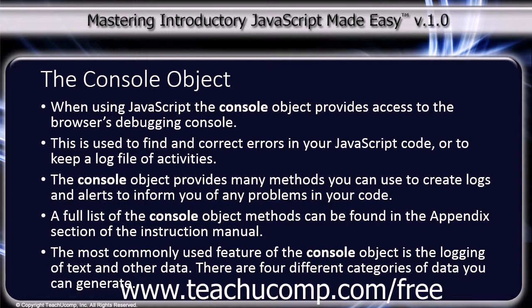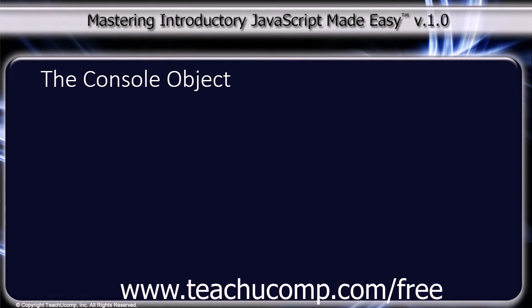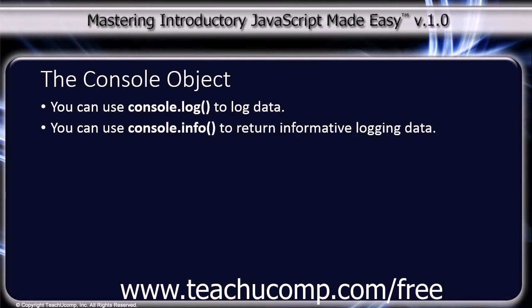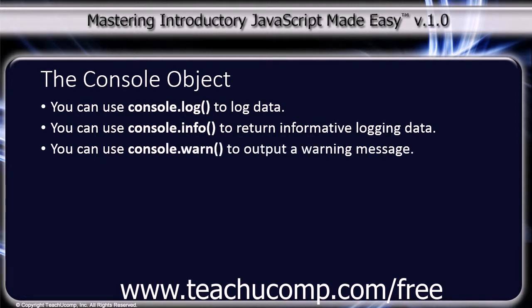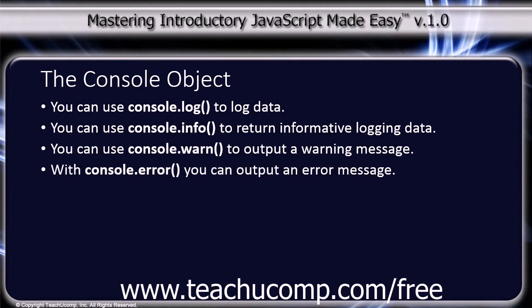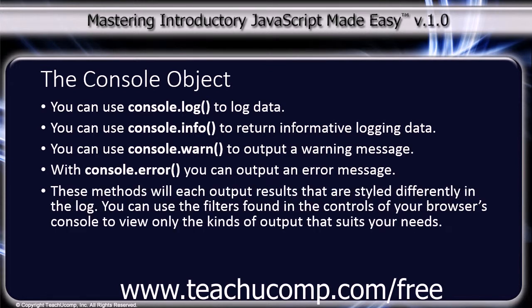The most commonly used feature of the console object is the logging of text and other data. There are four different categories of data you can generate. You can use console.log, which is used to log data; console.info, which is used to return informative logging data; console.warn, which is used to output a warning message; and console.error, which is used to output an error message. These methods will each output results that are styled differently in the log. You can use the filters found in the controls of your browser's console to view only the kinds of output that suit your needs.